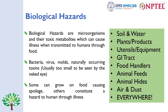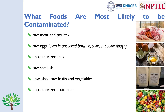Biological hazards include bacteria, viruses, molds, and naturally occurring toxins produced by some bacteria. They are usually too small to see with the naked eye. Some can grow on food causing spoilage; others constitute a hazard through illness. Microorganisms that can contaminate food are present everywhere — in soil, water, plant products, utensils, equipment, the GI tract, food handlers, animal feeds, animal hides, air, and dust. The most common contaminated foods are raw meat and poultry, raw eggs, unpasteurized milk, raw shellfish, unwashed raw fruits and vegetables, and unpasteurized fruit juices.